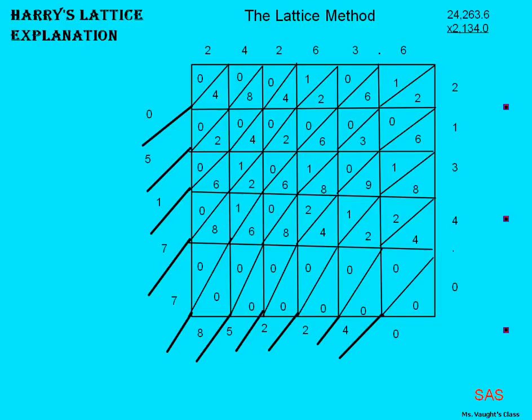6 times 2 is 12. 6 times 1 is 6. 6 times 3 is 18. 6 times 4 is 24. 6 times 0 is 0. And you go that way for the rest of the boxes.